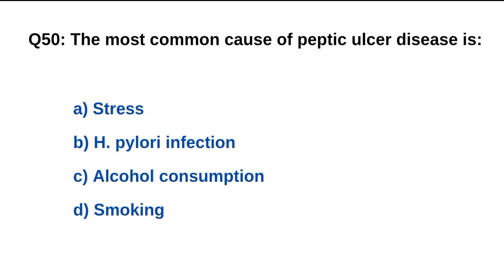Question number 50. The most common cause of peptic ulcer disease is? The right option is B: H. pylori infection.